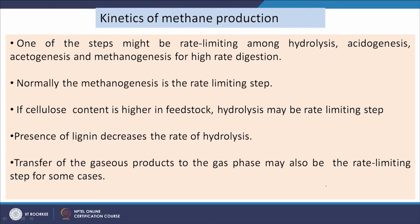Normally, the methanogenesis step is very slow relative to other steps and is the rate-governing step. However, if cellulose content is very high in the feedstock, or if lignocellulosic biomass is present, the hydrolysis step may also take more time and become limiting. In general for simple compounds, the methanogenic step is rate-limiting.